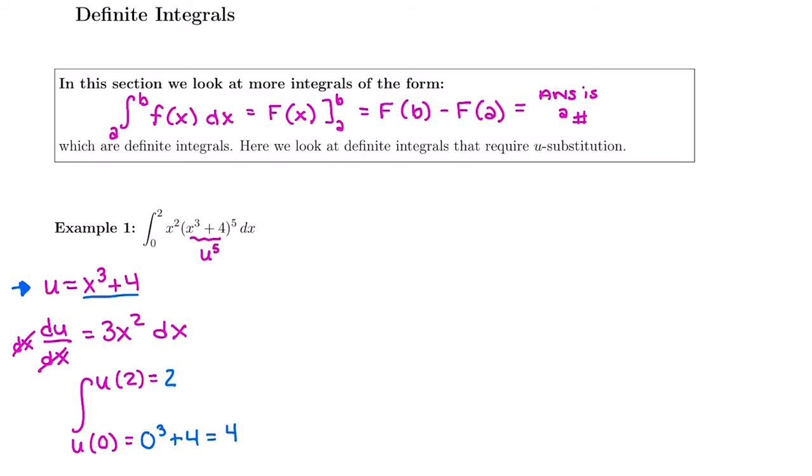And then I'm going to do 2³ + 4. So 2 for x is going to give me 12 out for what u equals. 2³ + 4. x³ + 4. And now I'm ready for my substitution.